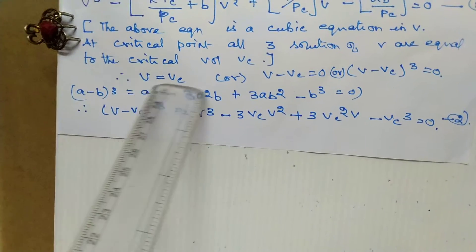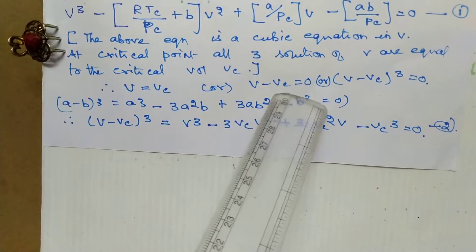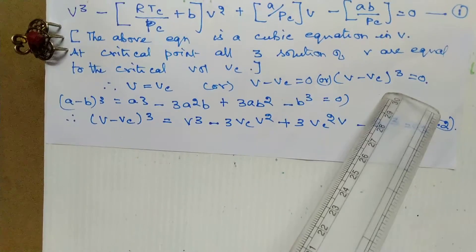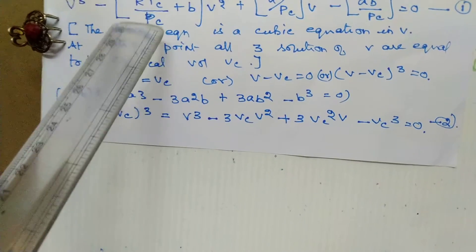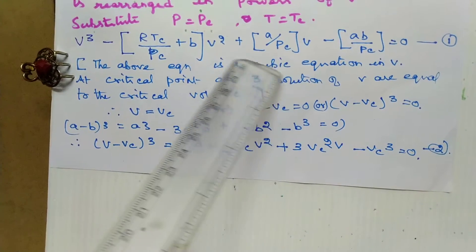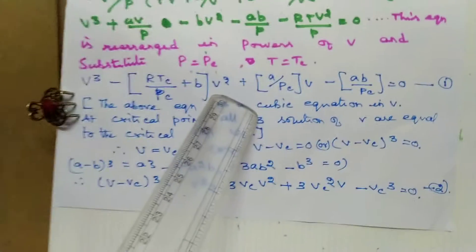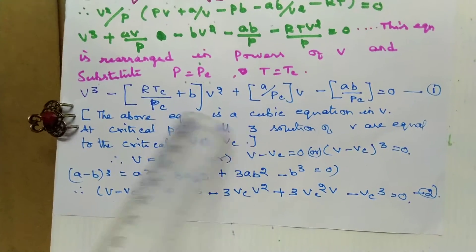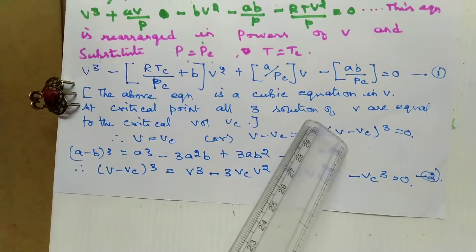So V is equal to Vc, otherwise V minus Vc is equal to 0. So V minus Vc cubed is equal to 0. Now, if we look at this equation, at critical temperature, all three values are equal: V is equal to Vc, so V minus Vc is equal to 0.